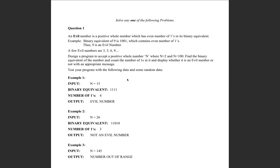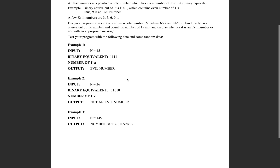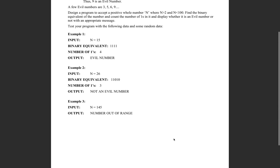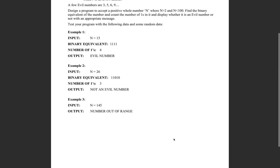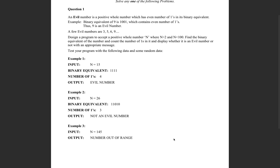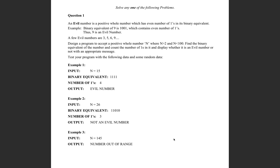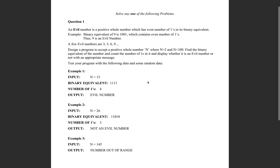Hello guys, welcome to Code with PK. In this video I'm going to solve question one of the ISC specimen paper 2020, which will help you prepare for your Class 12 computer science practical exams. The question says an evil number is a positive whole number which has an even number of ones in its binary equivalent. For example, the binary equivalent of 9 is 1001, which contains an even number of ones, so it is an evil number.